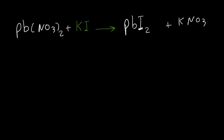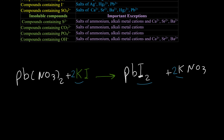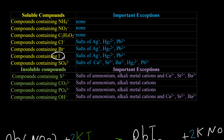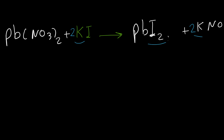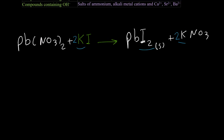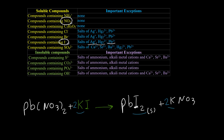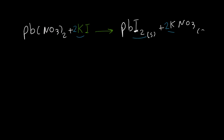For the next step we must balance the equation. We have two iodides, so we put a coefficient of two for potassium iodide, and also two for potassium nitrate to balance potassium and nitrate. According to the solubility table, iodide is insoluble with lead, mercury, and silver, so lead iodide is solid in this equation. But nitrate always forms soluble compounds regardless of the cation, so potassium nitrate is aqueous.